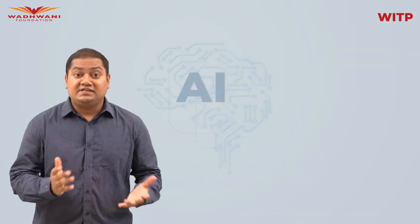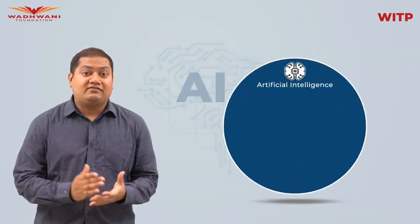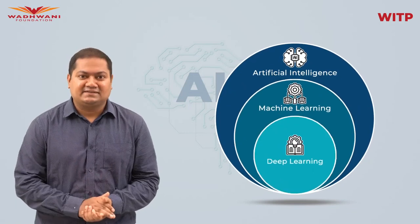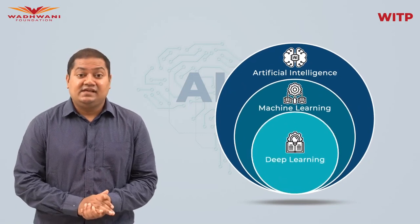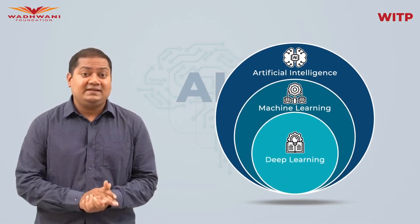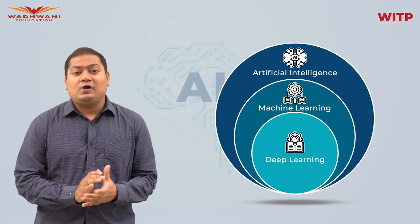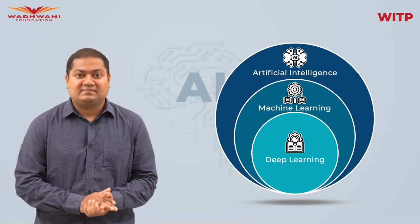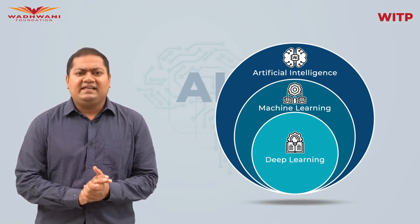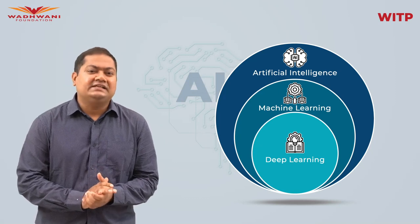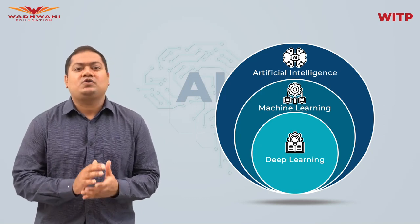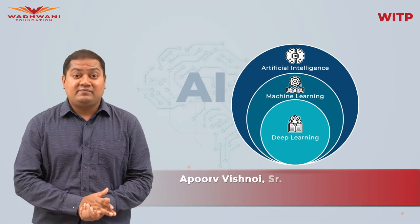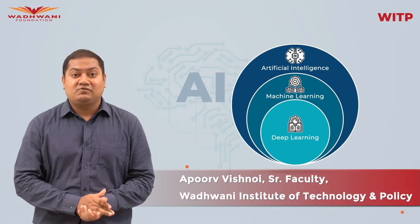In this video we learned about artificial intelligence, machine learning, and deep learning — the relationships between the three, examples of each, and what machine learning cannot do at the moment. Hope you found the information in this video valuable.